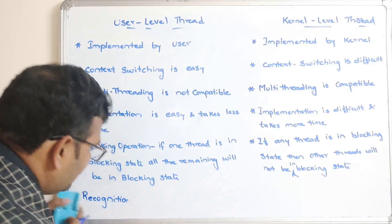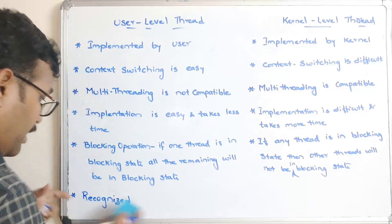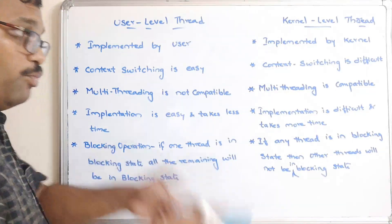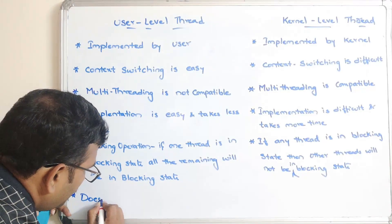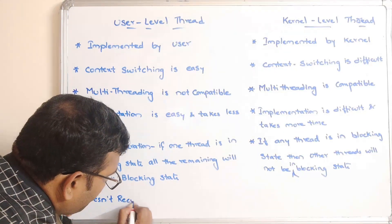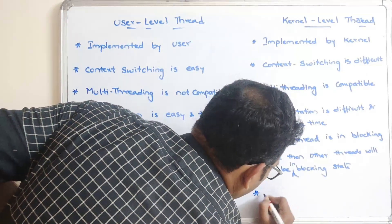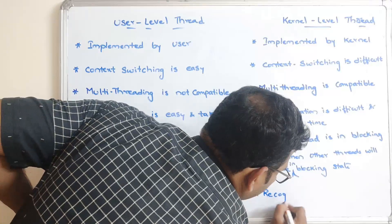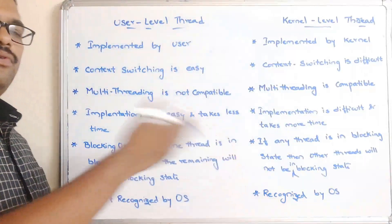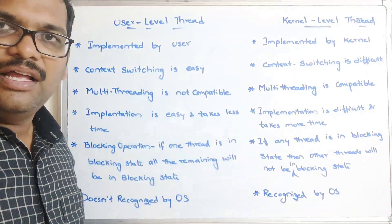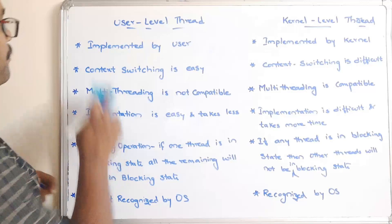The sixth difference is OS recognition. User-level threads are not recognized by the operating system. Kernel-level threads are recognized by the operating system because the kernel itself creates and implements these threads.